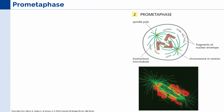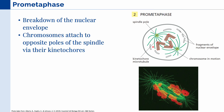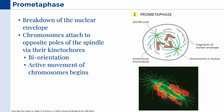Next, we have the prometaphase. The first thing that occurs in this stage is the breakdown of the nuclear envelope. After this has occurred, the chromosomes are now able to attach to the mitotic spindle via their kinetochore microtubules, or the kinetochores. Since the sister chromatids are attached with two kinetochore microtubules, we call this bi-orientation, and it is in this stage that the active movement of the chromosomes begins.